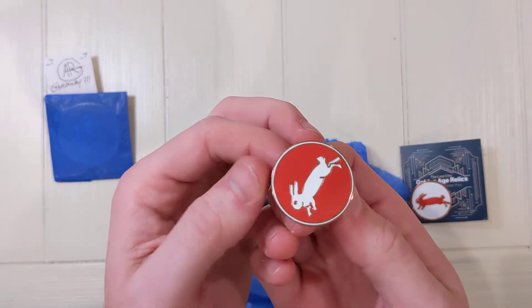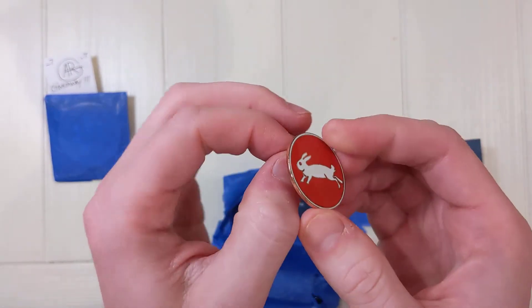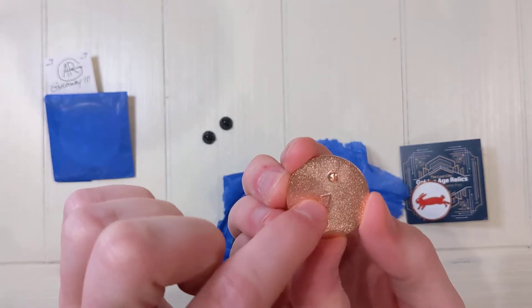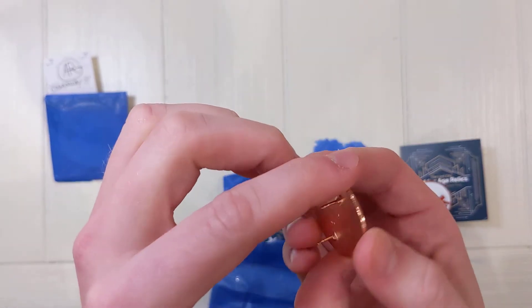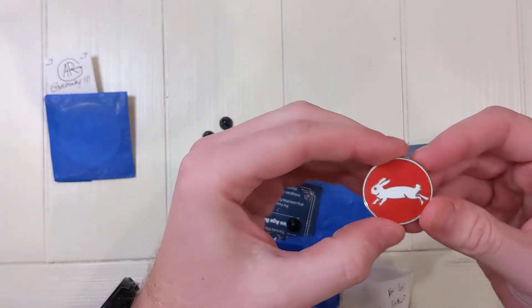But we've seen these bunny pin signs in Scourge of the Past. And you see, I love that, the Golden Age Relics. The seven, dot dot dot seven. I love that. It's like the salute. That is a killer pin.